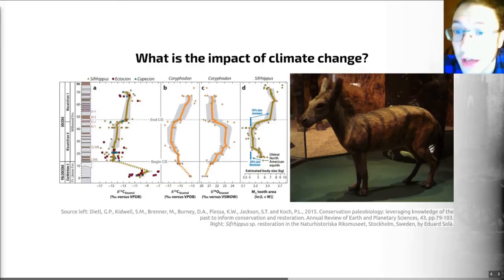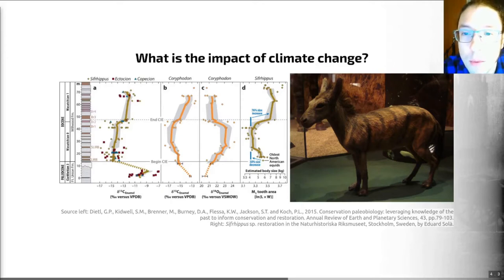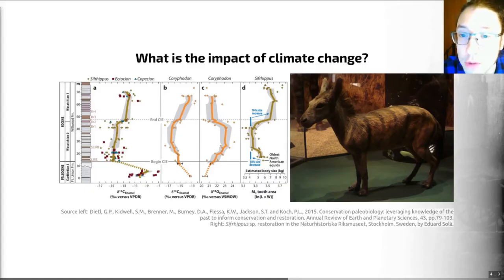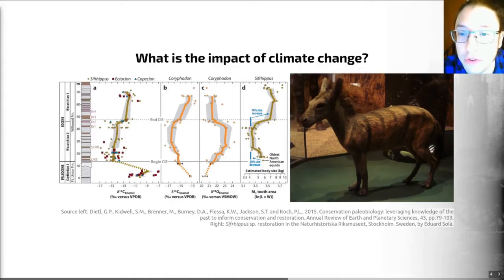In contrast, the fossil record provides unique information on the biological consequences of climate change, which we can use to validate these models. It provides countless natural experiments where we can look at the ecological and evolutionary responses to a wide range of different forms and extents of climate change. That constrains our predictions and can yield general insights that help us understand biotic responses to climate changes.